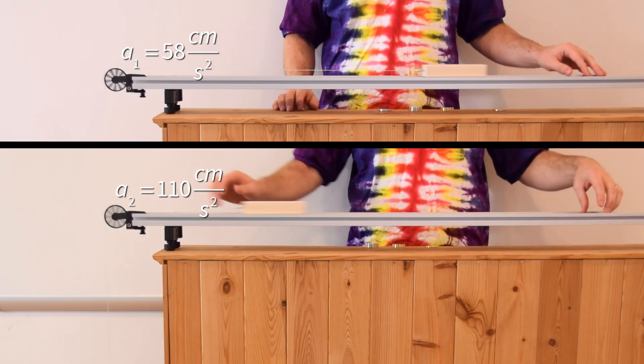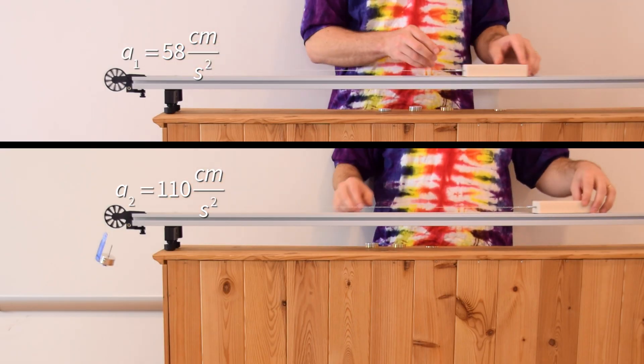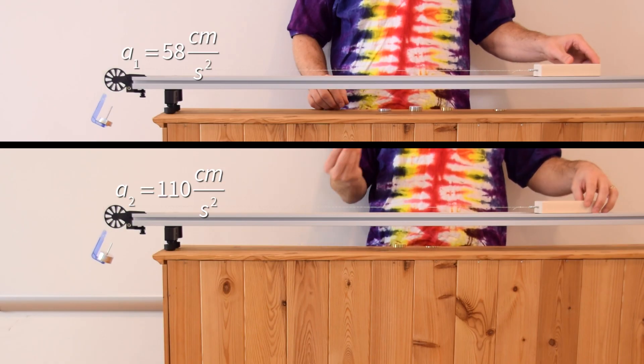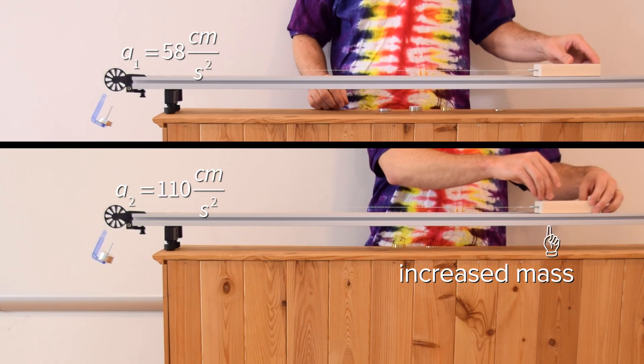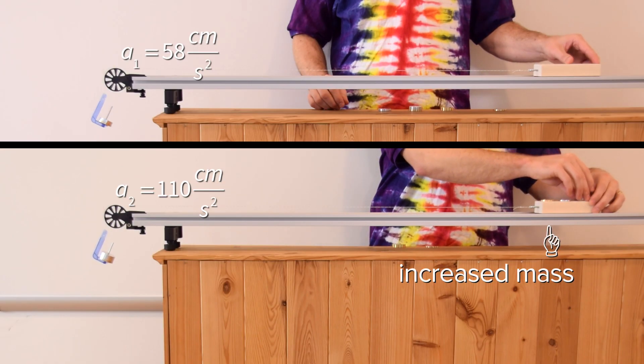Now, Bo, what do you think will happen to the acceleration of the block if I keep the force applied the same? However, I place mass on top of the block, and therefore increase the mass of the block. Increasing the mass of the block should increase the resistance to a change in state of motion of the block, and therefore should decrease the acceleration of the block.